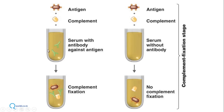Scenario one: patient serum containing the antibody we want to measure — the patient is positive for that infectious disease. Scenario two: patient serum without the antibody. We mix the serum with antigen and complement in both scenarios. In scenario one, the antigen attracts the antibody, an antigen-antibody complex forms, which attracts the complement, and the complement is fixed. This is complement fixation.